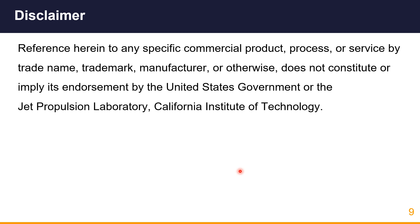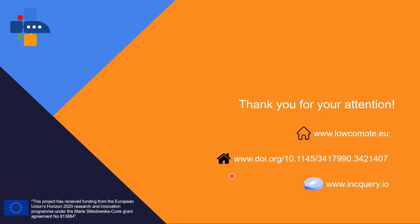Finally, a disclaimer from NASA JPL: reference herein to any specific commercial product, process, or service by trade name, trademark, manufacturer, or otherwise does not constitute or imply its endorsement by the United States Government or the Jet Propulsion Laboratory, California Institute of Technology. If you are interested in this research, please visit the Locomode website to learn more, or look up the workshop paper that introduced an earlier prototype of the validation and verification workflow. You can also visit inquiry.io to learn more about Inquiry Server, Inquiry Model Viewer, or the whole Inquiry suite. Thank you for your attention.